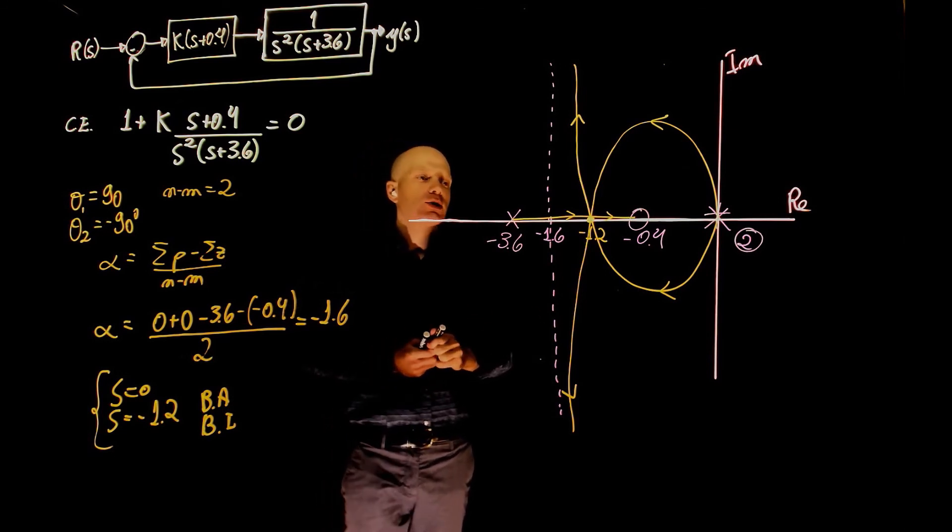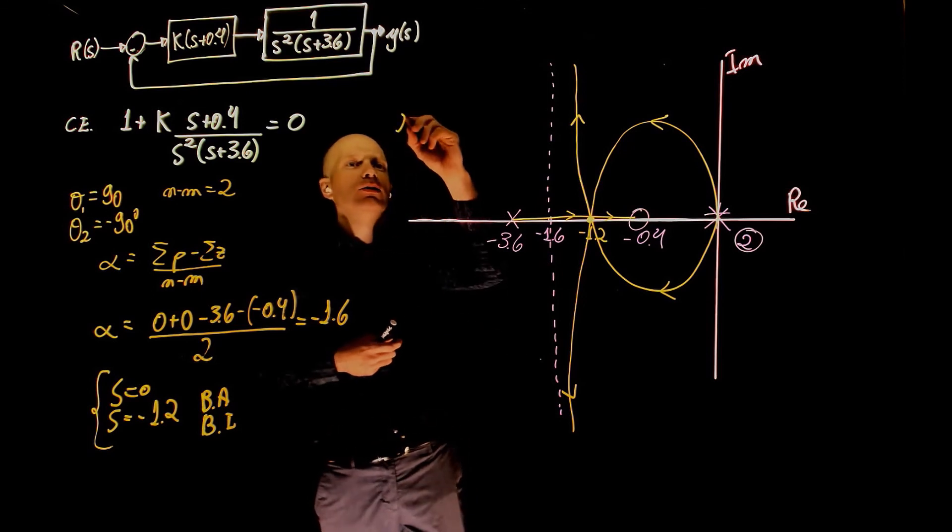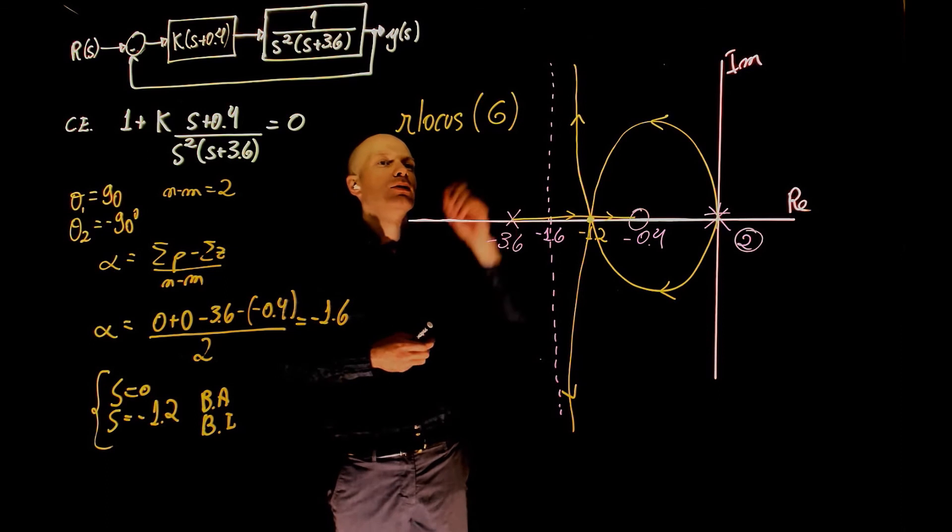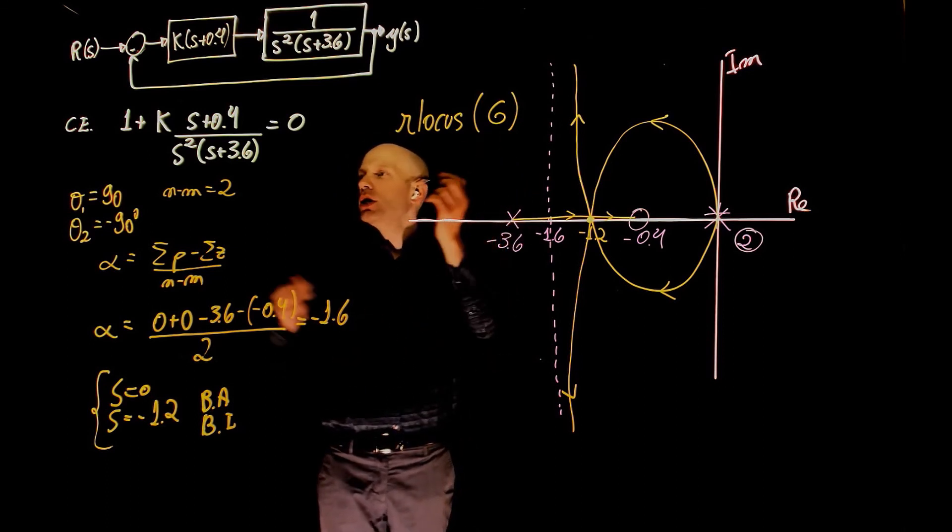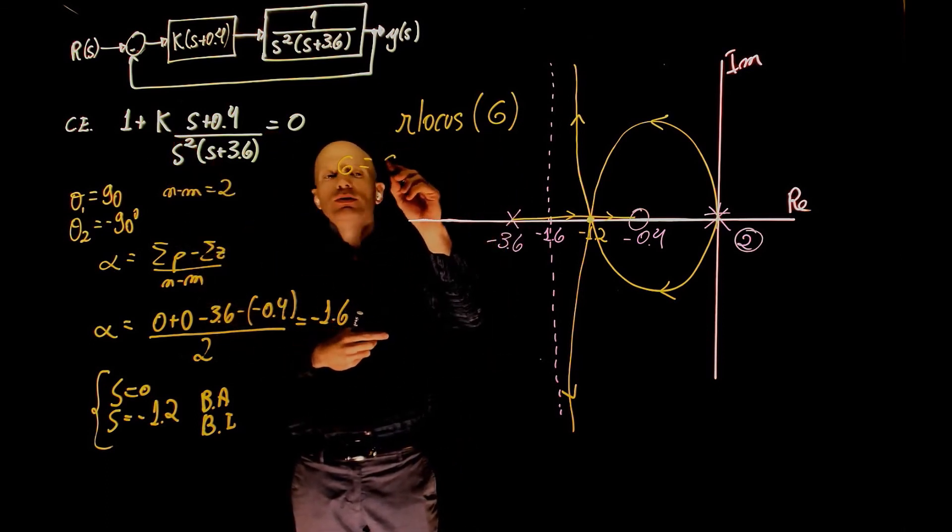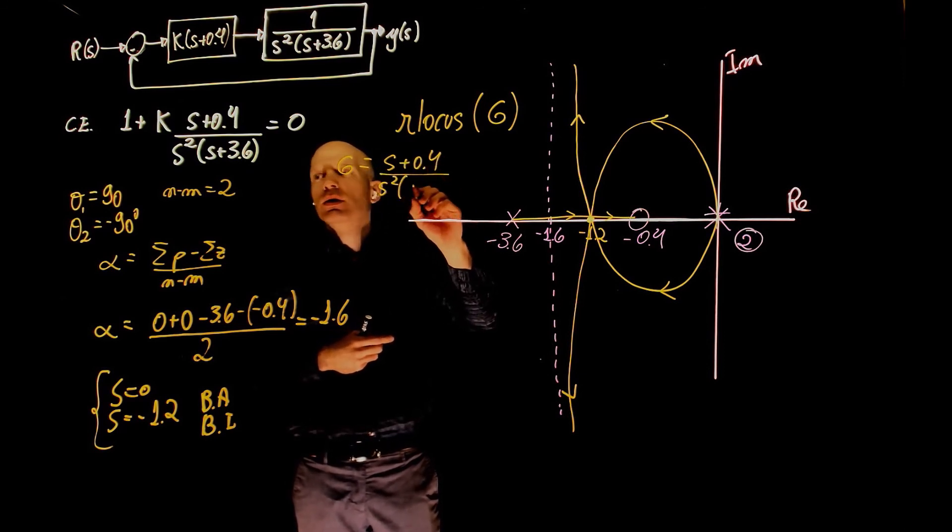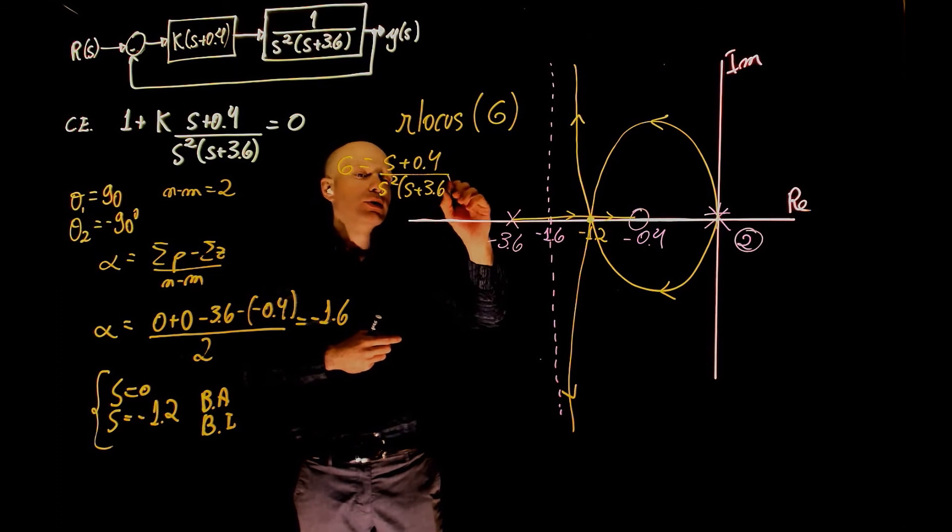You can verify these results by typing rlocus of g in MATLAB, where g is this transfer function here, g equals to s plus 0.4 over s squared s plus 3.6.